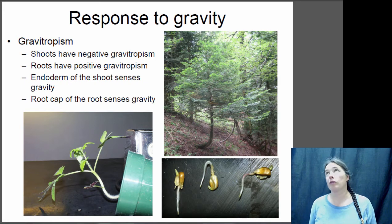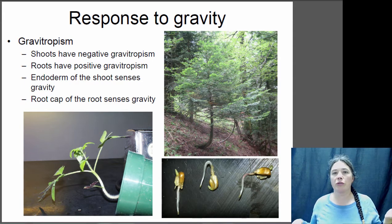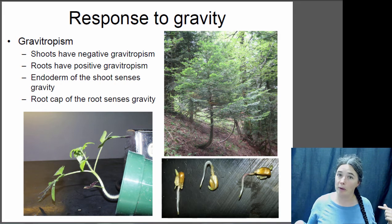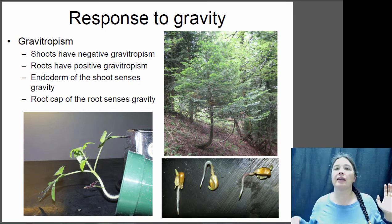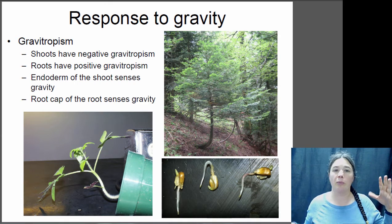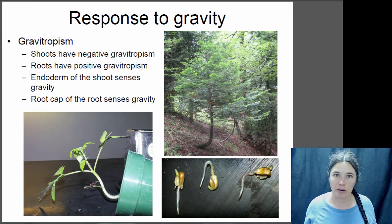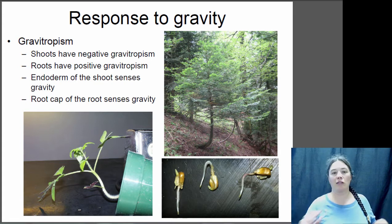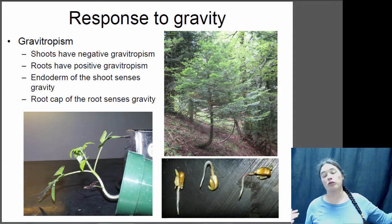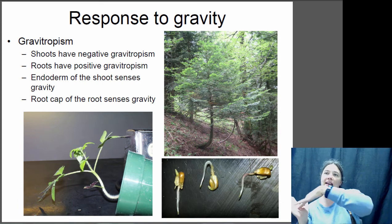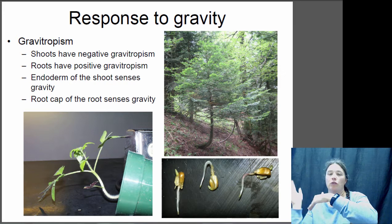Plants also respond to gravity. For a germinating seed it's very important that leaves go up and roots go down. Growth toward or away from gravity is called gravitropism. Growing away from gravity is negative gravitropism; growing towards gravity is positive gravitropism. Shoots have negative gravitropism and roots have positive gravitropism. You might see this if a houseplant gets knocked over and the shoot immediately bends and starts growing upward, or on steep slopes where snow pushes young trees over and they bend back upward.